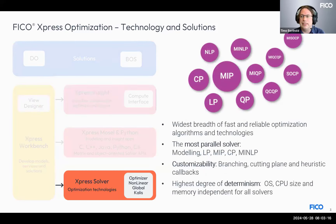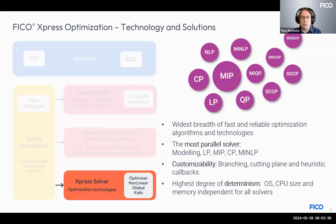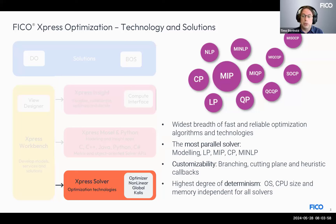As developers in the solver team, we have three main drivers in each release. First and foremost, we strive to make our wide variety of optimization algorithms faster with every release. Secondly, we want to make your life more convenient and open new optimization applications by offering new modeling capabilities, enhanced analysis tools, and other valuable features. Finally, we aim to further improve our solver's numerical robustness — with Xpress already being the most deterministic and probably the most numerically robust solver.